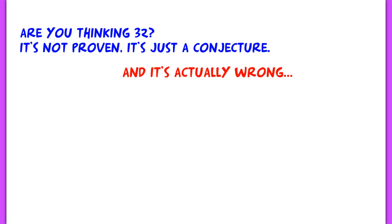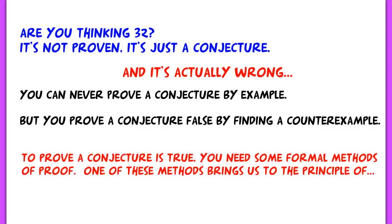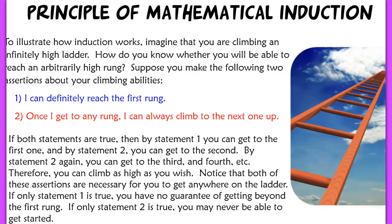Patterns don't necessarily hold true. You can never prove a conjecture by just examples. You can disprove a conjecture by finding a counterexample, like what we just saw — when we use six points, it's no longer 32 regions. When you want to prove something, you need some formal methods of proof, and one of those methods is the principle of mathematical induction.